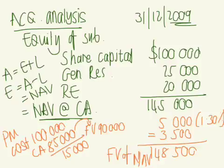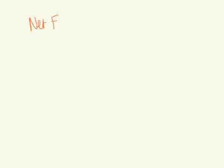To see whether there's goodwill acquired, we compare the net fair value of assets and liabilities — $148,500 — to how much we paid for the investment, i.e., the consideration transferred. The consideration transferred can be identified in the trial balance under Laura Limited, where there is an item 'shares in Jade' representing the investment made by the parent company, recorded at $160,000.